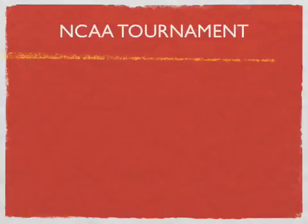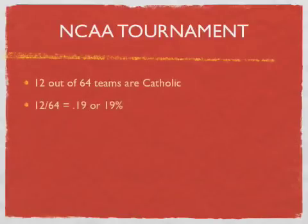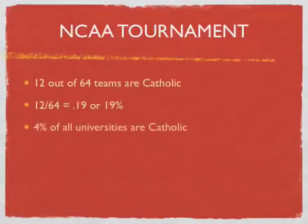So NCAA Tournament, 12 out of 64 teams are Catholic. 12 divided by 64 equals 0.19, which is your proportion, or 19%. 4% of all universities are Catholic. I looked these up and you can Google it and just calculate this out.